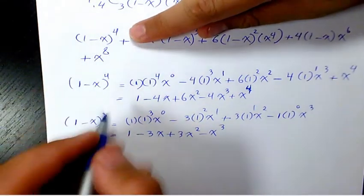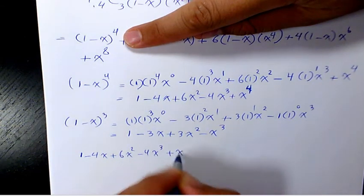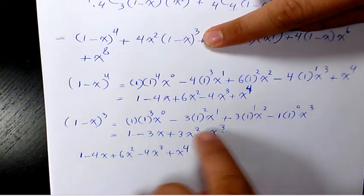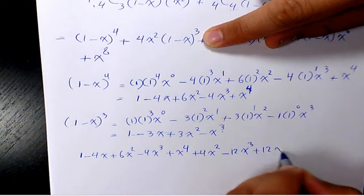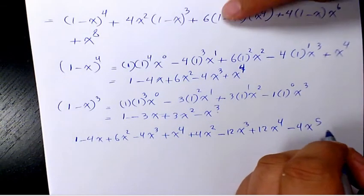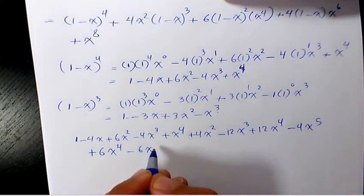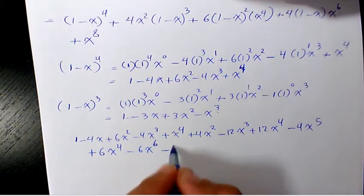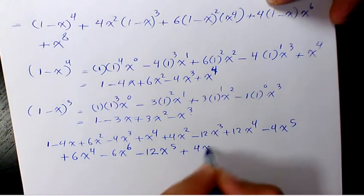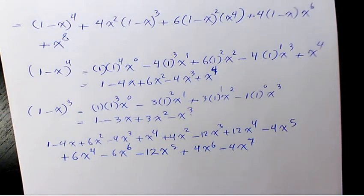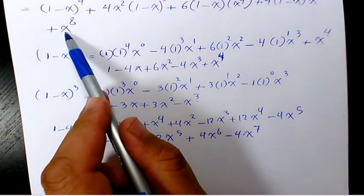Now let's put them into the original expression. We have 1 minus 4x plus 6x squared minus 4x cubed plus x to the power of 4. Then multiply all these terms by 4x squared, giving 4x squared minus 12x cubed plus 12x to the power of 4 minus 4x to the power of 5. Next we have 6x to the power of 4 minus 6x to the power of 6, minus 12x to the power of 5, and 4x to the power of 6 minus 4x to the power of 7, and x to the power of 8.